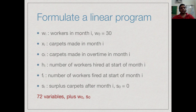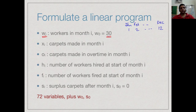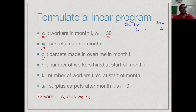To make a linear program out of this, we need variables. We are dealing with 12 months, so for month i (i from 1 to 12), let wi be the number of workers — initially 30. Let xi be the total number of carpets made in a month, and oi be the number of carpets made in overtime specifically, since those carry an extra cost.